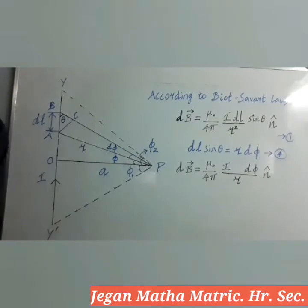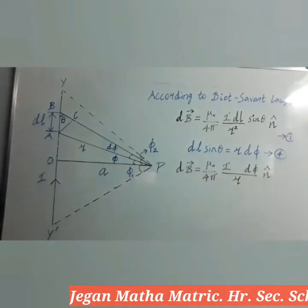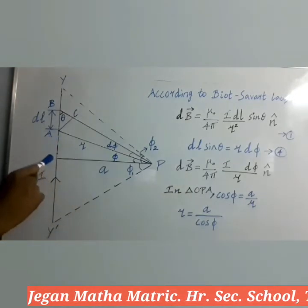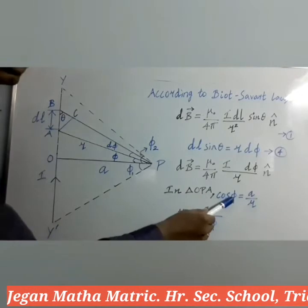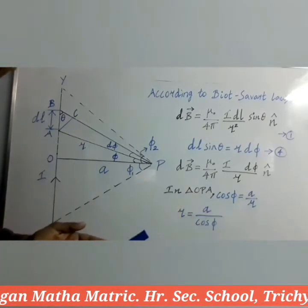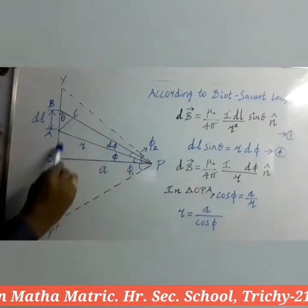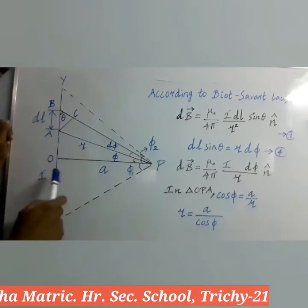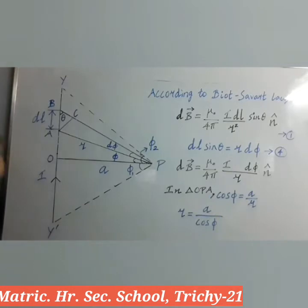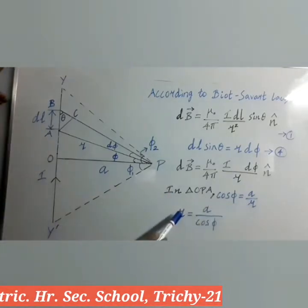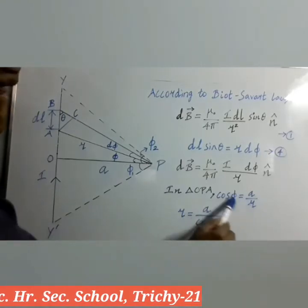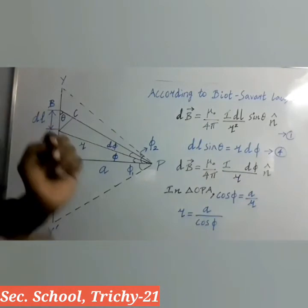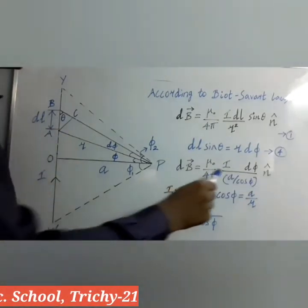Now we have to substitute the value of R. For that, we take triangle OPA and find the value of cosΦ. The formula for cosΦ is adjacent side by hypotenuse. In triangle OPA, the adjacent side is A and the hypotenuse (opposite to 90°) is R. So cosΦ is equal to A by R. Rearranging: R is equal to A by cosΦ. This value is substituted in the expression, writing A by cosΦ at the denominator, and cosΦ is taken to the numerator.